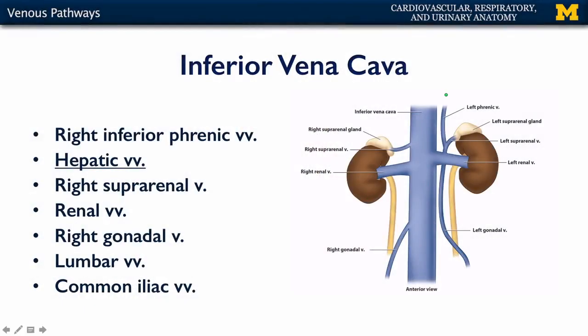The inferior vena cava drains everything inferior to the diaphragm, and you'll note a lot of branches very similar to their arterial counterparts. There are inferior phrenic veins — on the left side these drain into the renal vein, while on the right they drain directly into the inferior vena cava. There are also suprarenal veins: the left suprarenal vein drains into the left renal vein, whereas on the right it drains directly into the inferior vena cava. A similar situation occurs with the gonadal veins — the left gonadal vein drains into the left renal vein, whereas the right drains directly into the inferior vena cava.